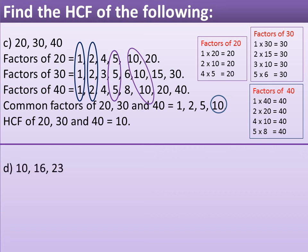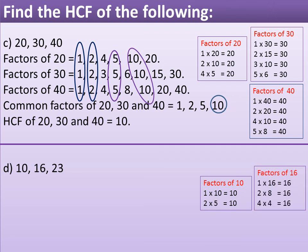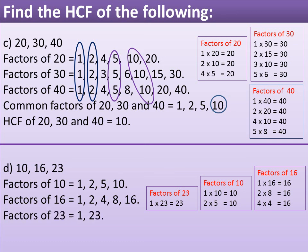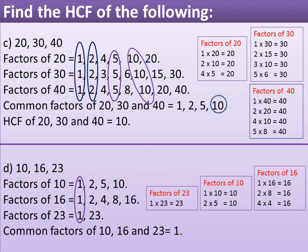Question D: Find the HCF of 10, 16, and 23. Factors of 10 are 1, 2, 5, and 10. Factors of 16 are 1, 2, 4, 8, and 16. Factors of 23 are 1 and 23 only. The common factors of 10, 16, and 23 are equal to 1 only. And the HCF of 10, 16, and 23 is equal to 1.